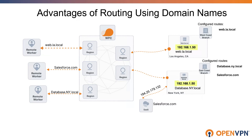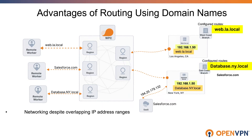In our case, it will be web.la.local for the web server and database.ny.local for the database server. Since domains have been configured as routes and networks are differentiated based on their fully qualified domain names, users can be routed to the right resource on the right network even though we have networks with overlapping IP address ranges.